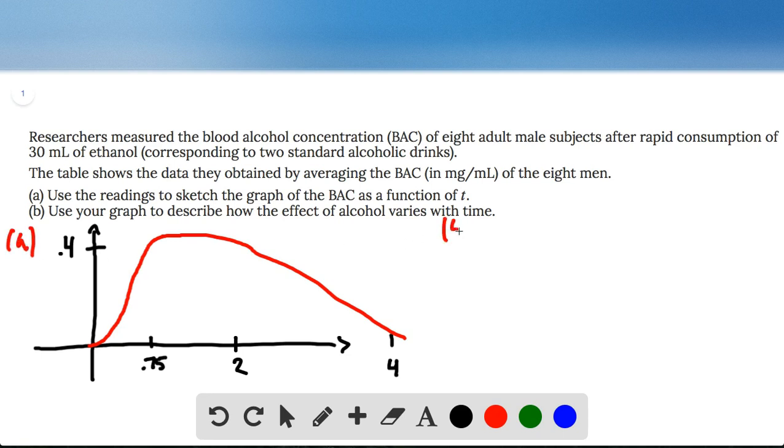Now for part B, use your graph to describe how the effect of alcohol varies with time. It looks like you get this rapid increase in less than an hour, and then after your maximum here, the remaining three and a quarter hours, your BAC decreases over time.